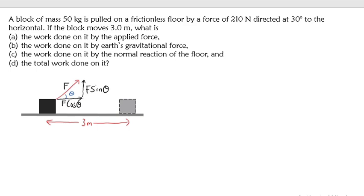Let's break down all the forces acting on this object. We have a normal force pointing upward, a gravitational force pointing downward, and the applied force at 30 degrees. The surface is frictionless, so there is no friction force. Now let's answer part A: the work done by the applied force.